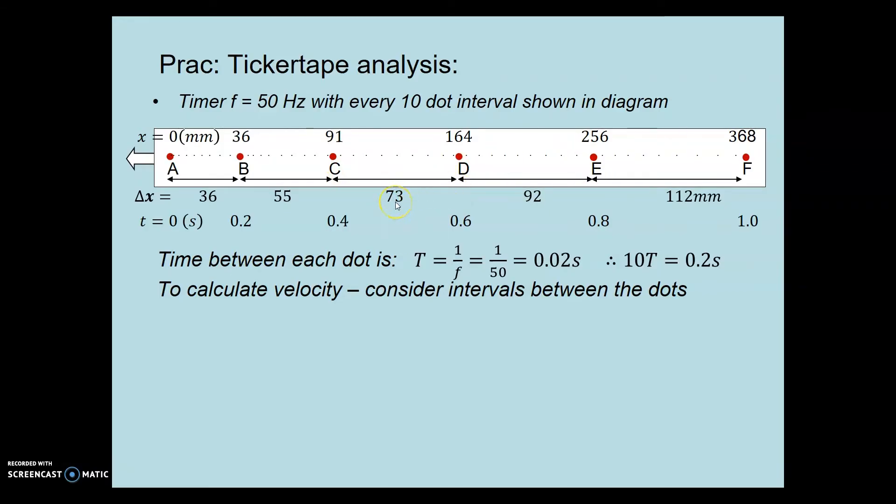We convert the millimeter values into meters. Now since average velocity is delta x upon delta t, for the first interval, we get 0.036 meters divided by the time interval, giving 0.18 meters per second.